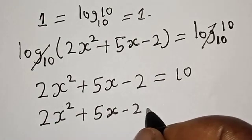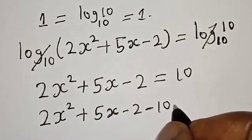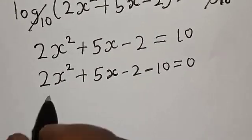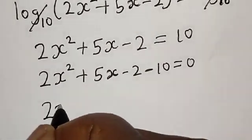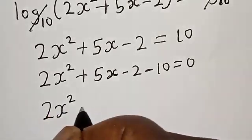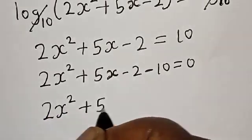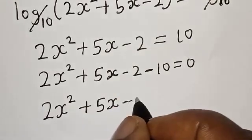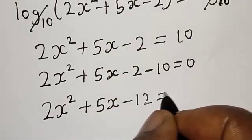Now we have 2x² + 5x - 2 - 10 equals 0. Then we have 2x² + 5x - 12 equals 0.